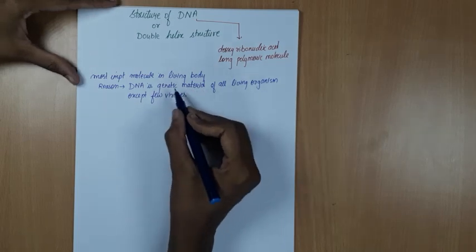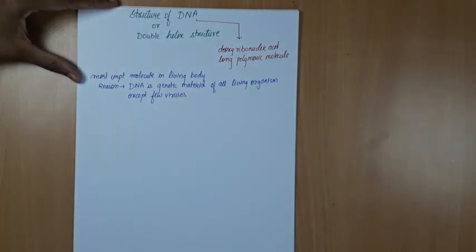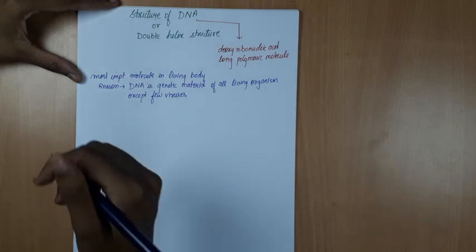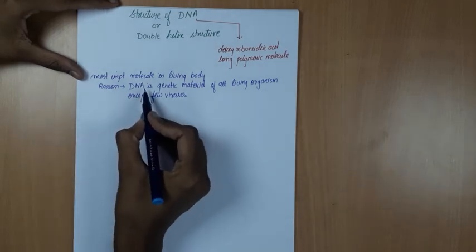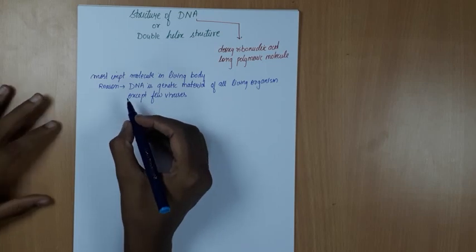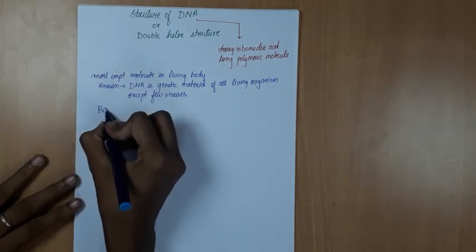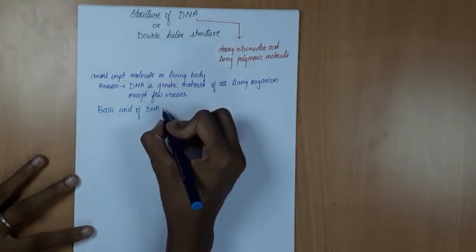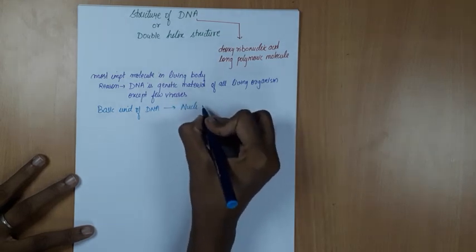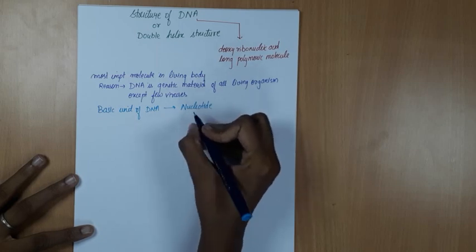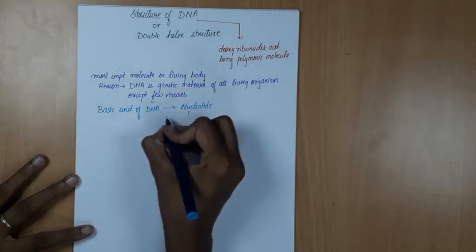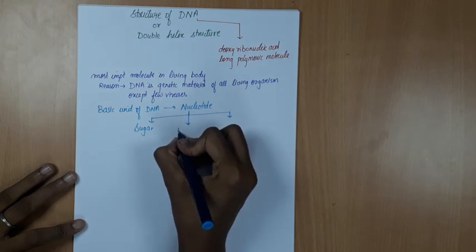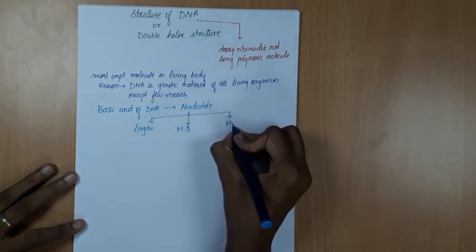What is this genetic material? Genetic material means DNA stores some characters and transfers them from one generation to another generation. The basic unit of DNA is nucleotide. This nucleotide is made up of three components: sugar, nitrogenous bases, and phosphate.